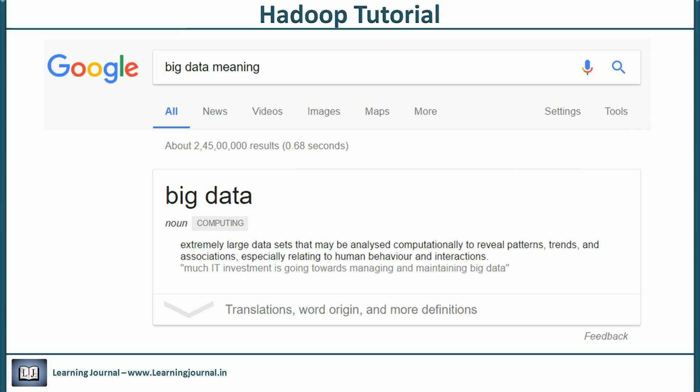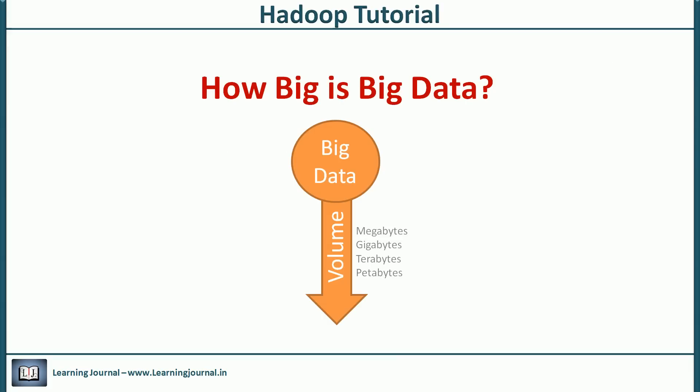One thing is clear with Google's response — it is a large data set. But the question is how much large? How big is the big data? Do you call a 100 GB data set big data? Or should it be in terabytes or petabytes to be called big data? This confusion existed for some time until people agreed to an acceptable definition.